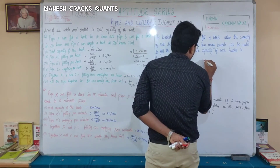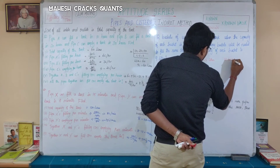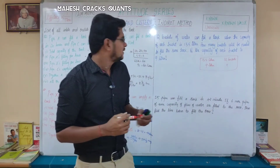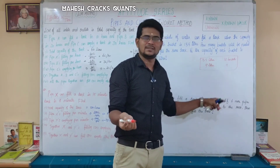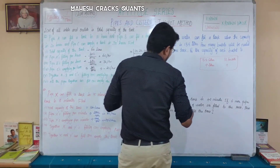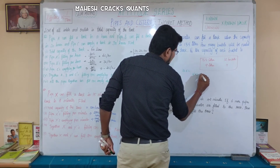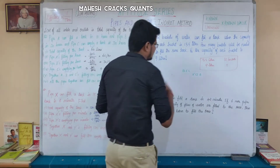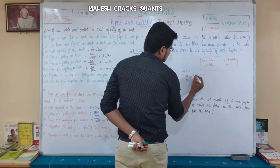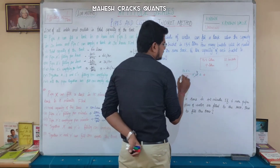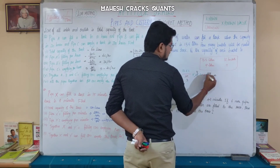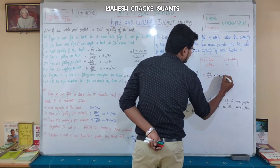Using the indirect method: 13.5L capacity requires 12 buckets; 9L capacity requires how many? Since capacity decreases, buckets increase. Calculation: 13.5 × 12 ÷ 9. First, 13.5 × 2 = 27, then 27 × 2 = 54, then 54 ÷ 3 = 18. So the answer is 18 buckets.